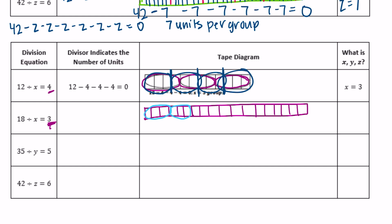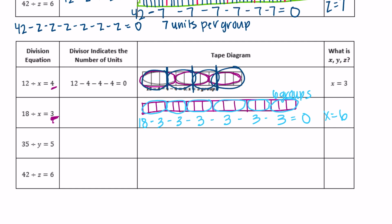For 18 divided by x equals 3, I separate the eighteen into groups of three — one, two, three, four, five, six. So we have 18 minus 3 minus 3 minus 3 minus 3 minus 3 minus 3 equals zero. There are six groups, and x equals 6. The subtraction equation is 18 minus 3, six different times, equals zero.